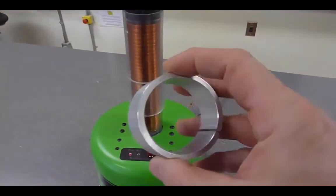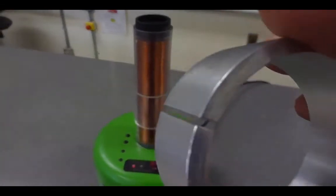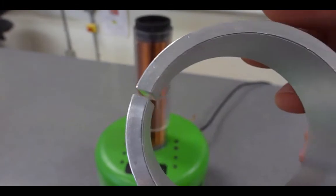Then we grab the next one. This is a metal ring made out of aluminum. There is in fact a slice through it, which means the current can't flow all the way around.